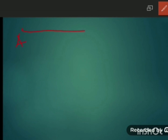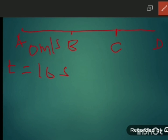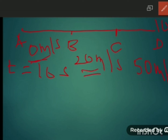Now let us see what non-uniform acceleration is. Suppose an object travels from A to D and we calculate its velocity every 10 seconds: at A it is 0 m/s, at B it is 20 m/s, at C it is 50 m/s, and at D it is 10 m/s. Velocity is changing but not by equal amounts. When you calculate acceleration, it will be different for each 10-second interval, and such acceleration is known as non-uniform acceleration.